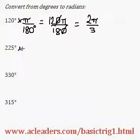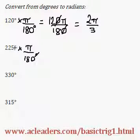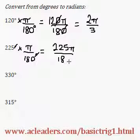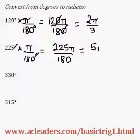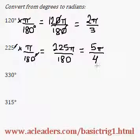How about 225 degrees? Pi over 180 degrees — cancel out. 225 pi over 180 degrees. And 45 goes into both 180 and 225. It goes into 225 five times, and it goes into 180 four times. So, 5 pi over 4.